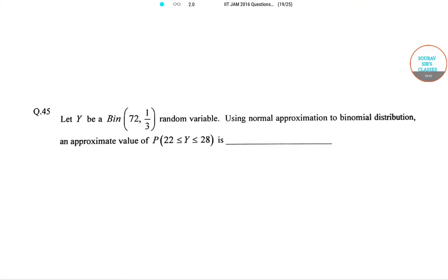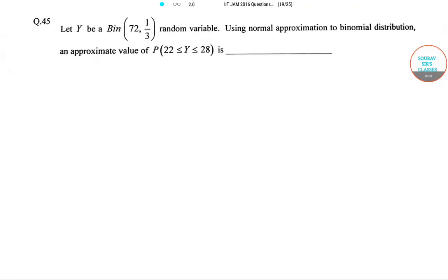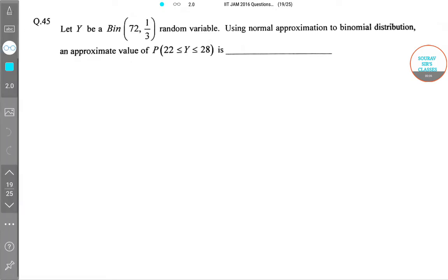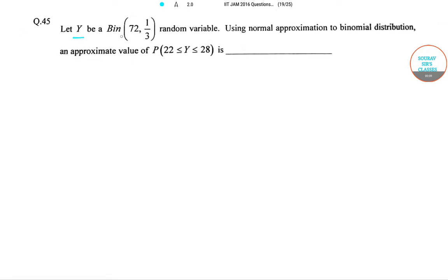Hello students, welcome to Sourav Sir's classes. The question is: let y be a Binomial(72, 1/3) random variable. That is, y follows a binomial distribution where n is equal to 72 and p is equal to 1/3. Using normal approximation to binomial distribution, find an approximate value of P(22 ≤ y ≤ 28).